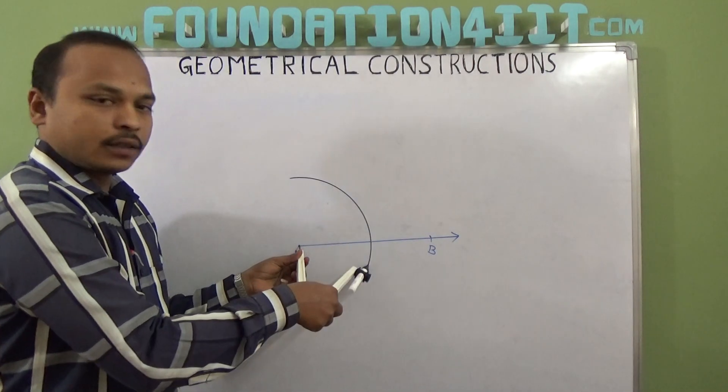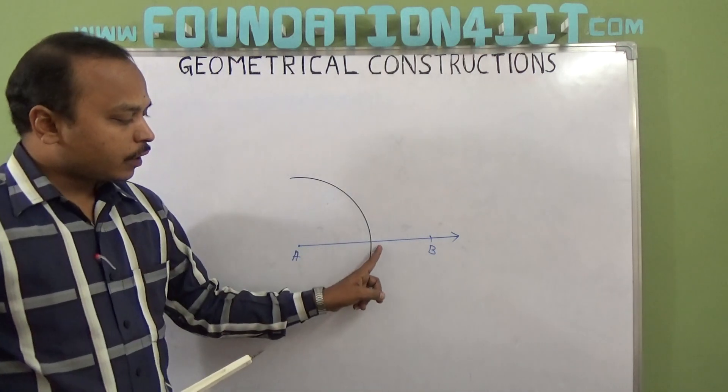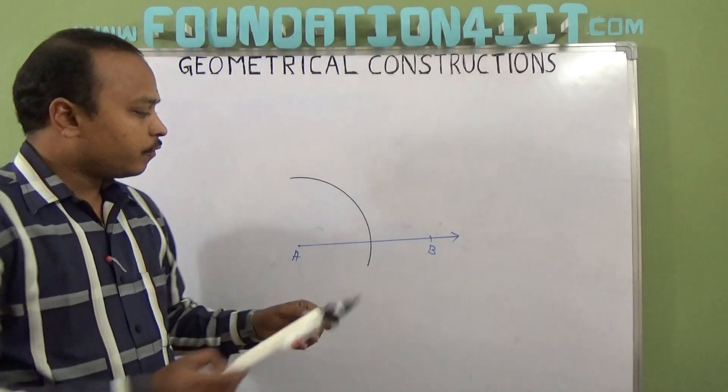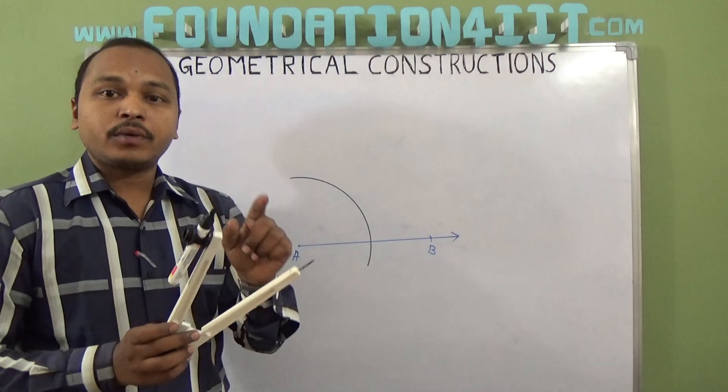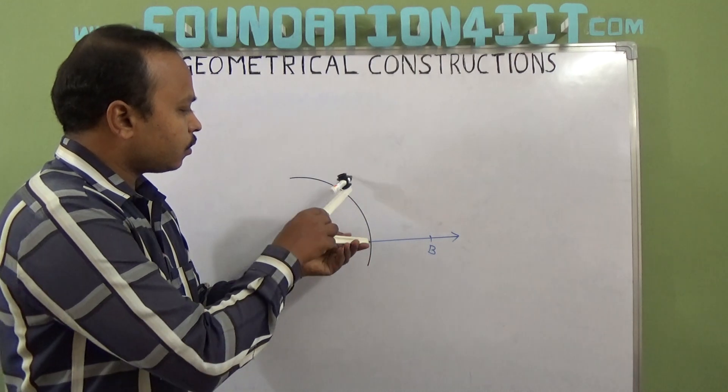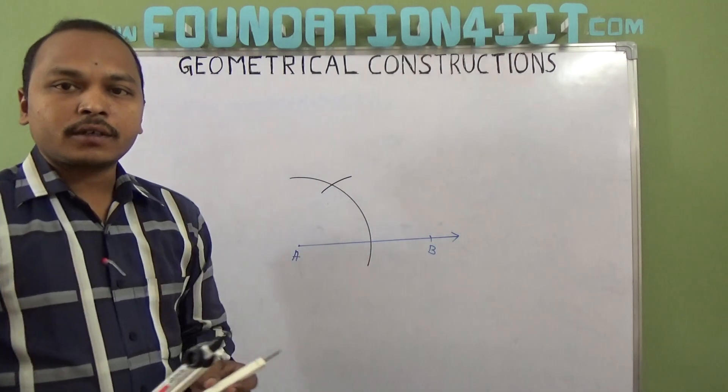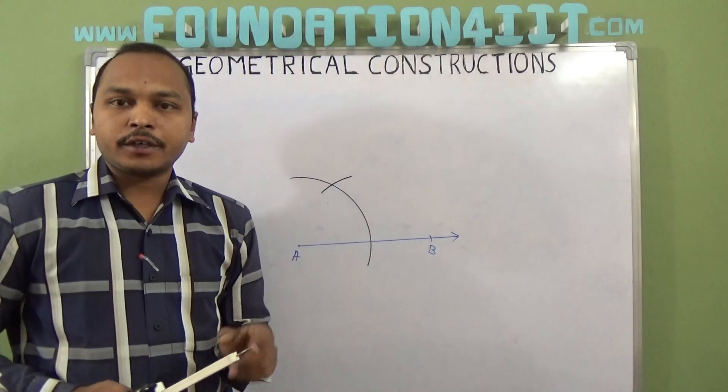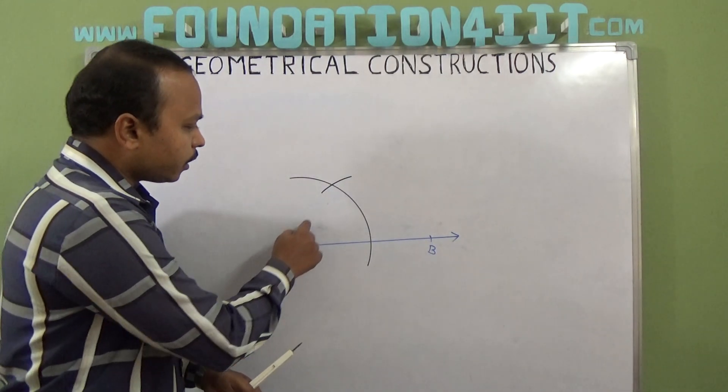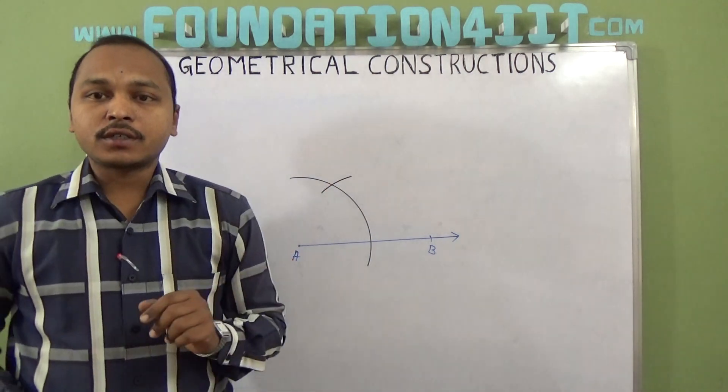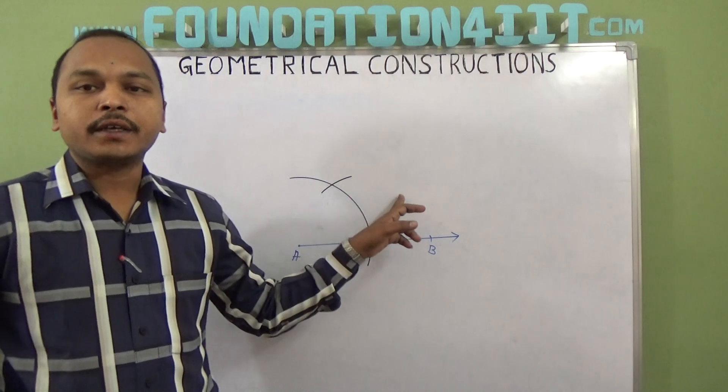Now from the point where it intersects on this particular ray, from there without changing this radius, again cut that arc. This is actually 60 degrees we know already. If you join this point and this point, 60 degrees will come. But I don't want 60, I need only 30.